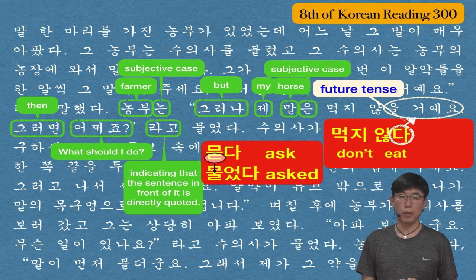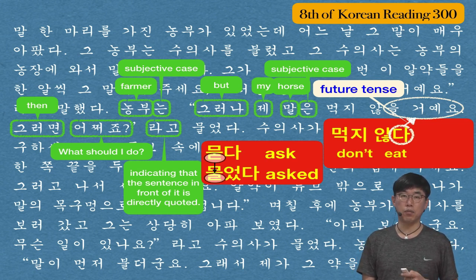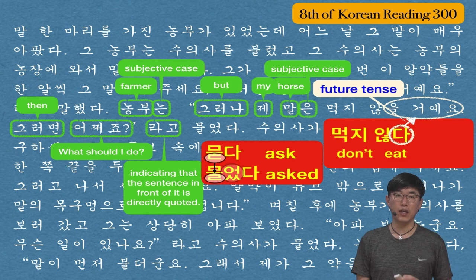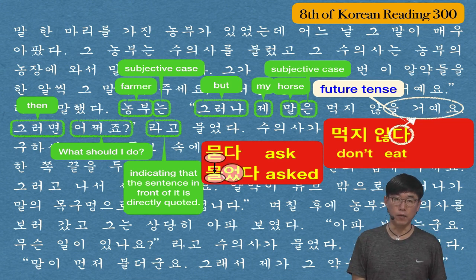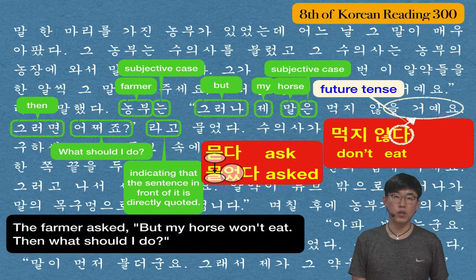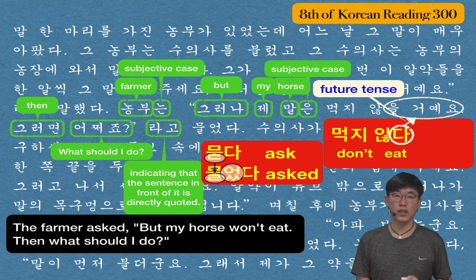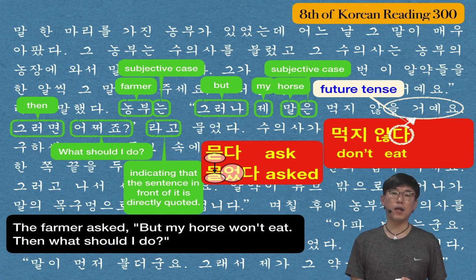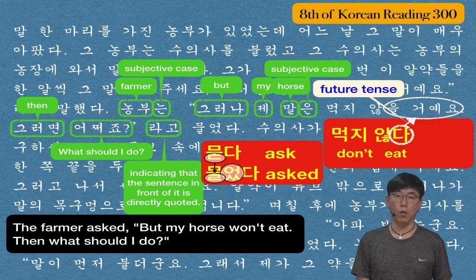물었다 came from 묻다 (to ask) — ㄷ undergoes conjugation and ㄹ is placed to form the past tense, so 물었다 is 'asked.' Full sentence: 농부는 그러나 제 말은 먹지 않을 거예요 그러면 어쩌죠? 라고 물었다 — The farmer asked: But my horse won't eat, then what should I do?